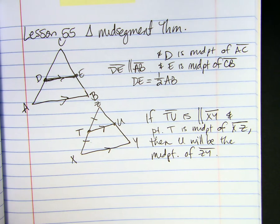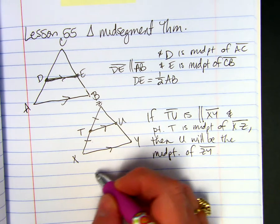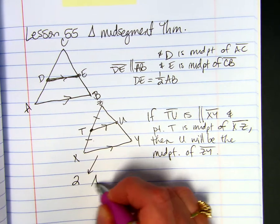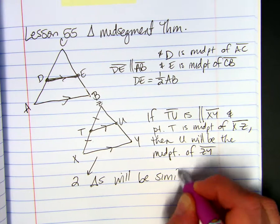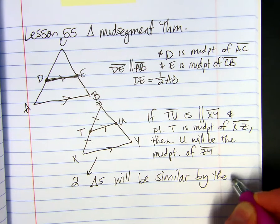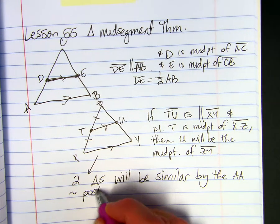If you have this kind of a figure, the two triangles will be similar by the AA similarity postulate.